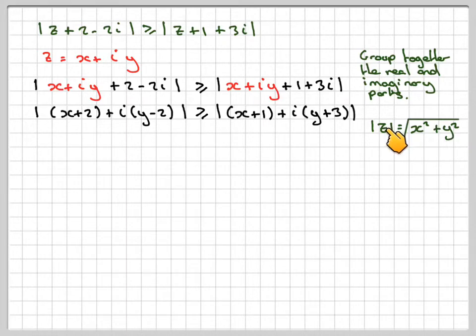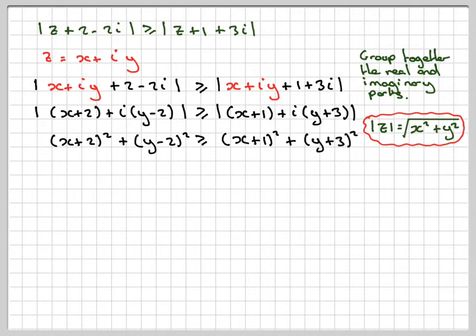The modulus of z squared is x² + y². That means I can now say that (x + 2)² + (y - 2)² ≥ (x + 1)² + (y + 3)².